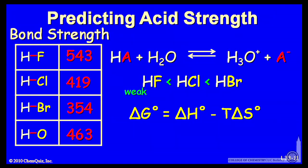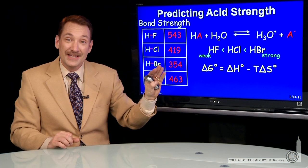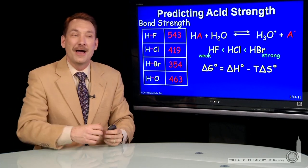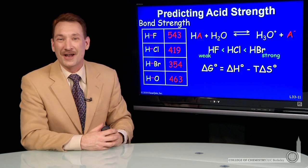And indeed, HF is a weak acid. It has a K less than 1, and HBr, a strong acid, a K greater than 1. In this case, dependent upon the strengths of the bond holding the proton on the molecule.